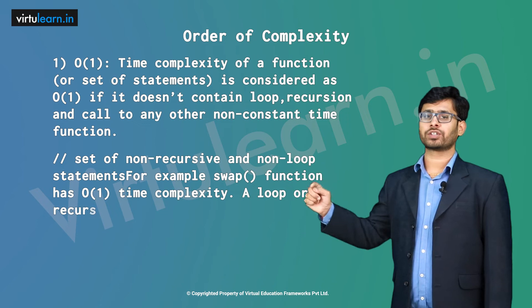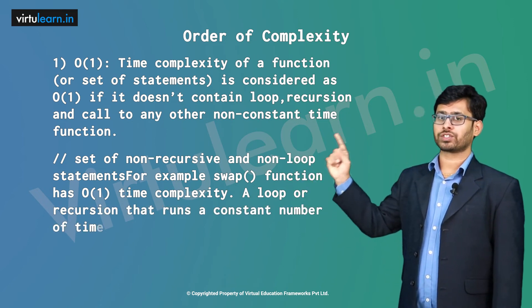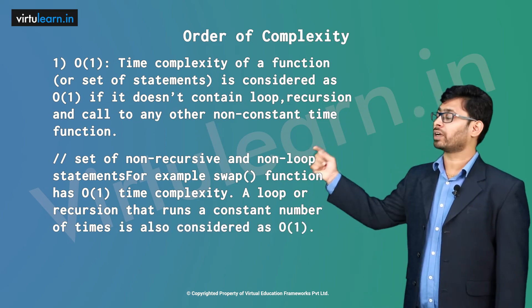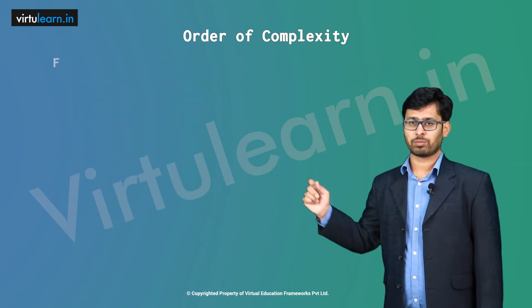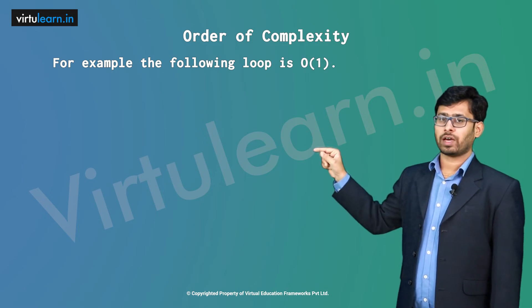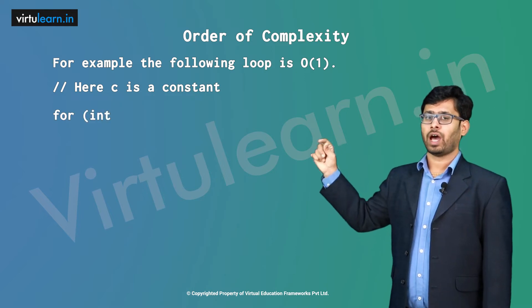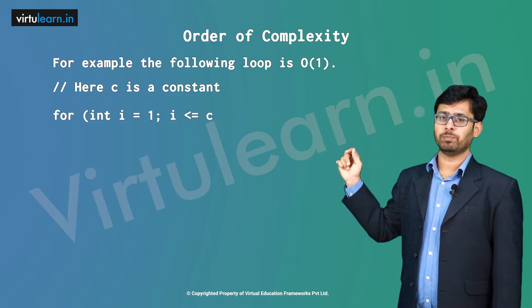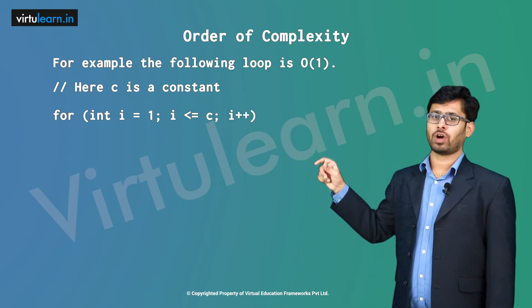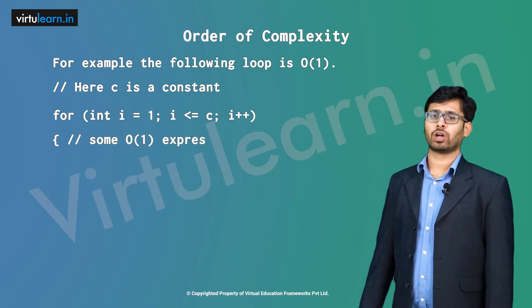A loop or recursion that runs a constant number of times is also considered O(1). For example, a for loop where c is a constant: for(int i = 1; i <= c; i++). For all such expressions, the time complexity is O(1).